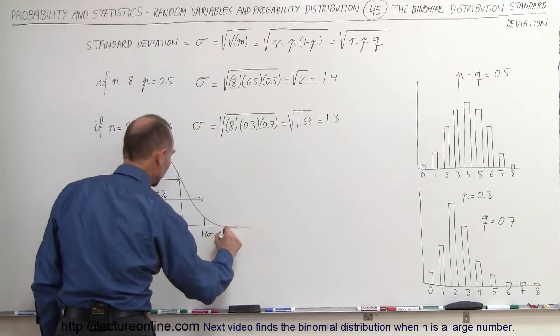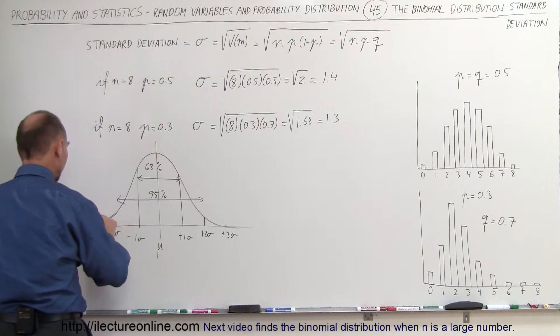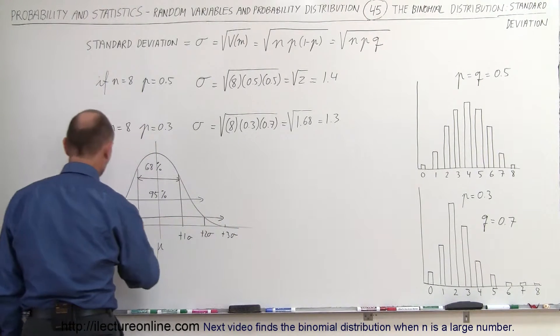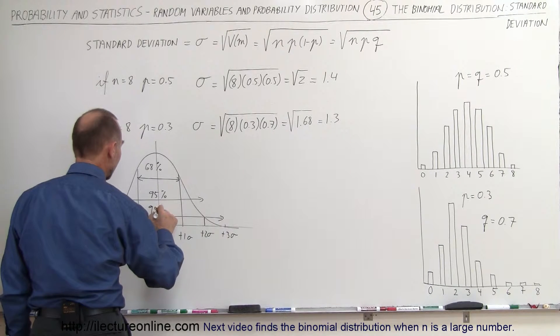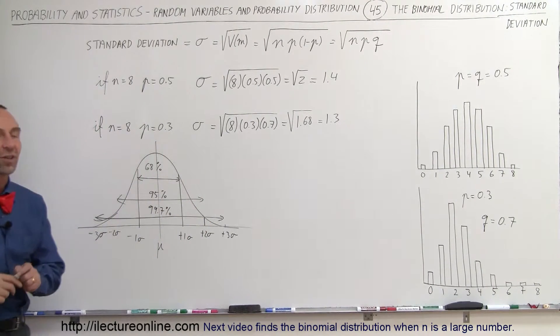And then we go plus 3 sigma to the right and minus 3 sigma to the left. You can then say that about 99.7% of all the values fall between plus or minus 3 sigma.